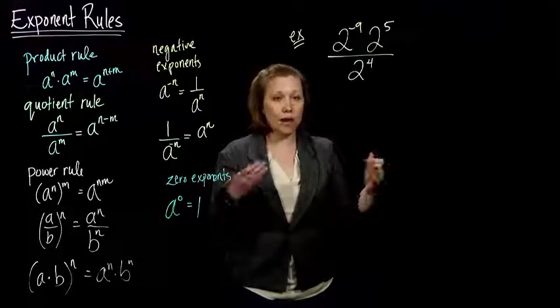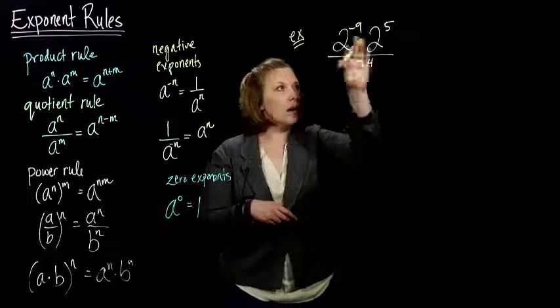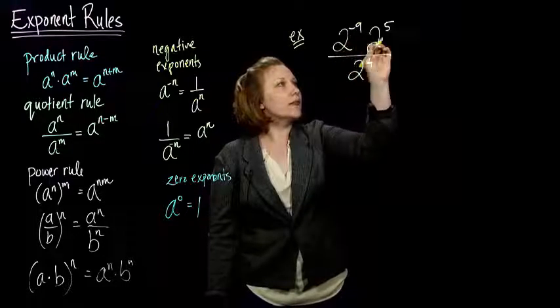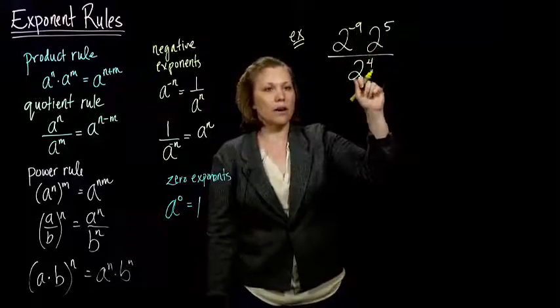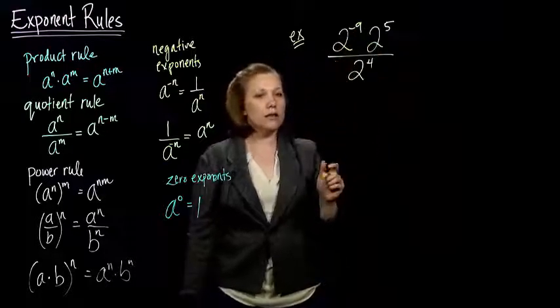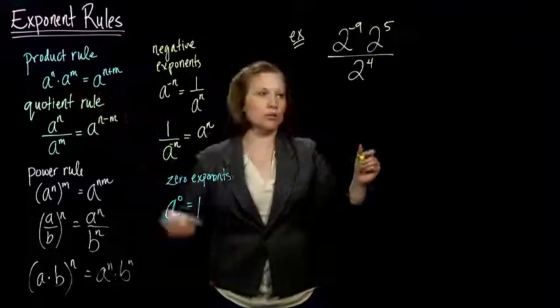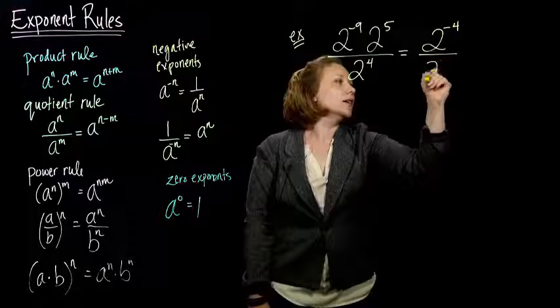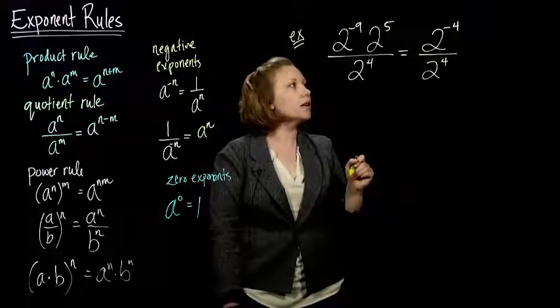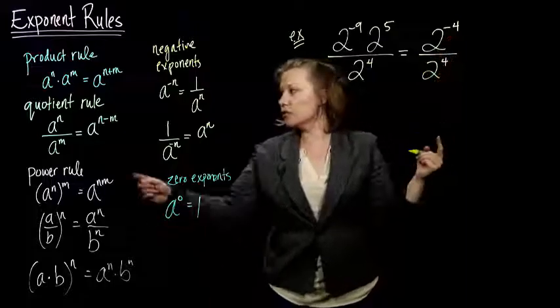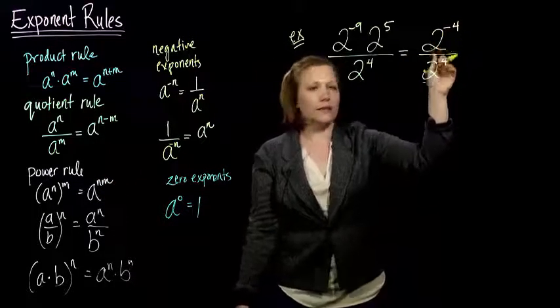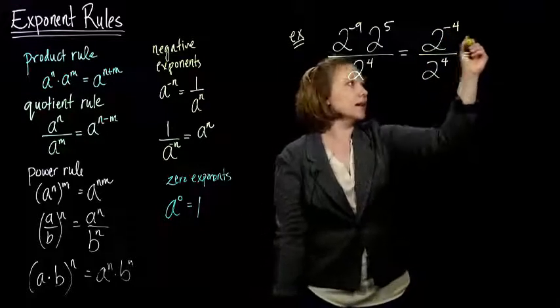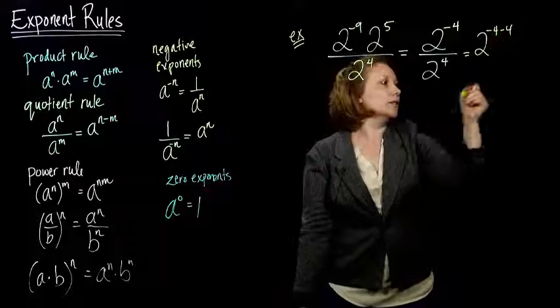Alright. Let's try it out. First example we'll look at is we've got 2 to the negative 9, 2 to the 5th all over 2 to the 4th. We're going to use a couple of the rules together here. I see I've got all 2's, that's good. That means I can use my rules. The first thing I see, I've got 2 to the negative 9 times 2 to the 5th. Well, I've got the same number raised to different powers. So we're going to use the product rule on that. Negative 9 plus 5 makes negative 4. And I still have my 2 to the 4th hanging out down there.